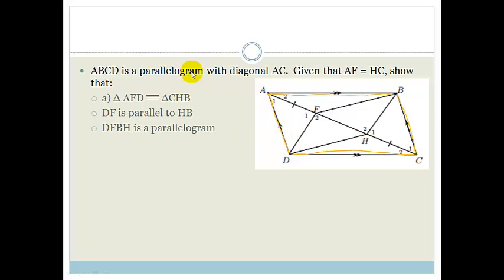And they say with diagonal AC. It says given that AF equals HC, show that triangle AFD. They want us to show that triangle AFD is congruent to triangle CHB.